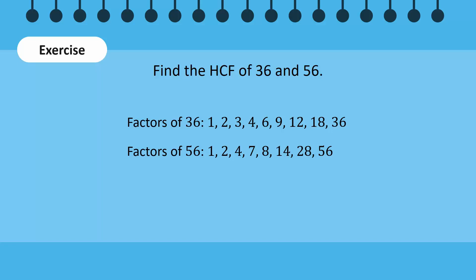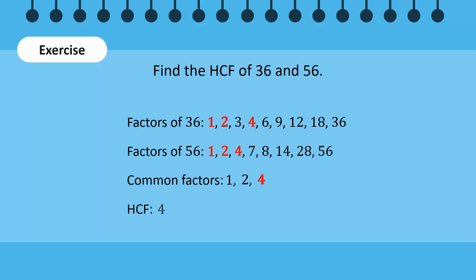Then find the common factors of both numbers. The common factors of both numbers are 1, 2, and 4. Lastly, find the HCF — it's visible that 4 is the highest common factor of 36 and 56.